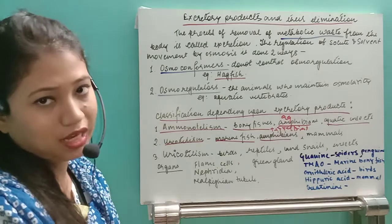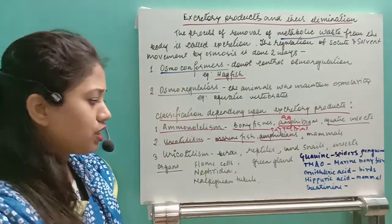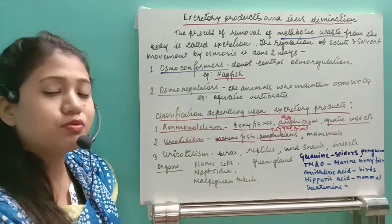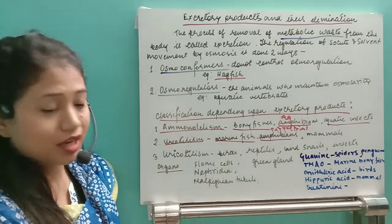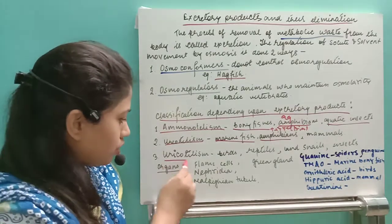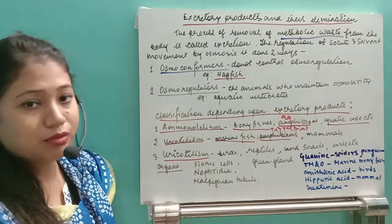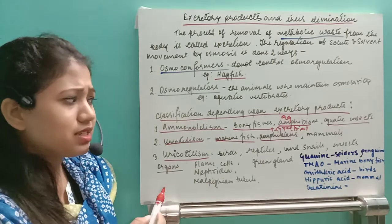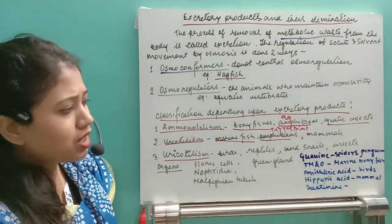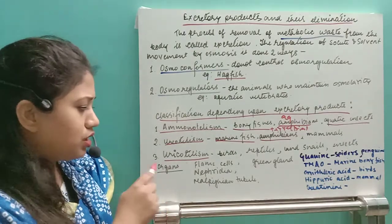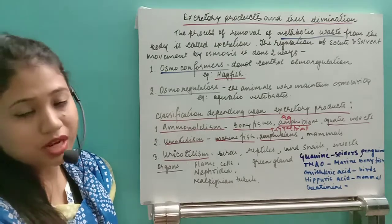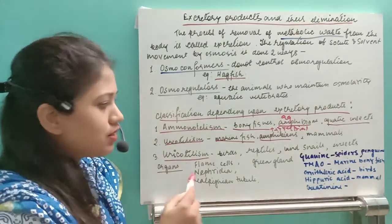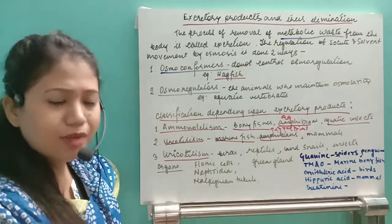Uricotelic organisms excrete uric acid as their nitrogenous waste product. Examples include birds, some reptiles, land insects, and snails. These organisms are called uricotelic because their waste product is uric acid.